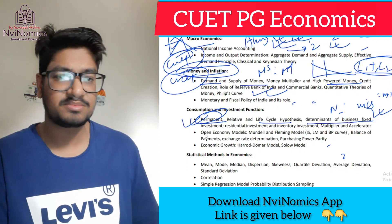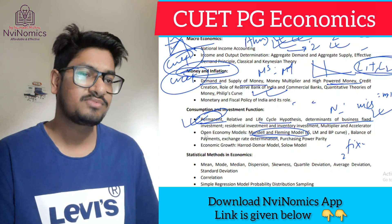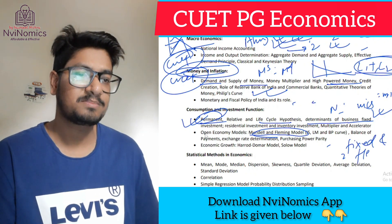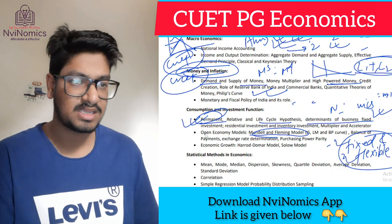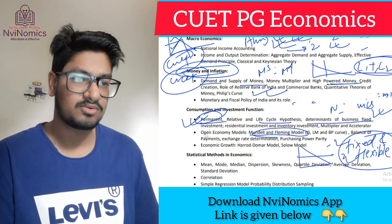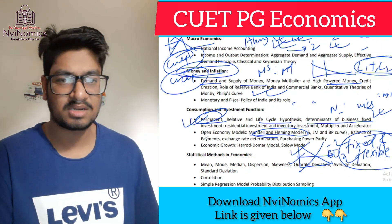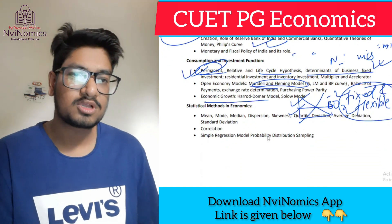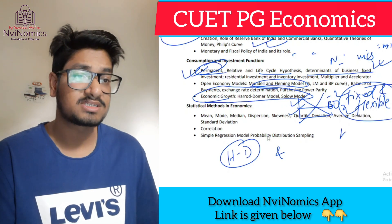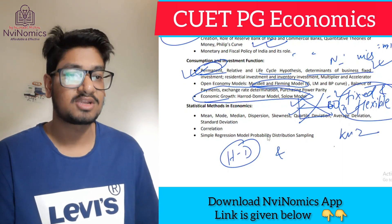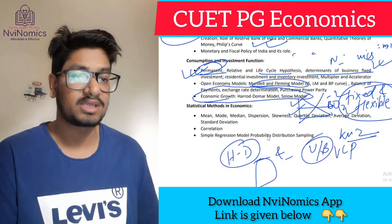Life cycle hypothesis and determinants of business investment — one or two questions come from these. Mundell-Fleming is very very important — see the basics in fixed and flexible exchange rate regimes, not in deep price volatility. Know the BOP curve — where depreciation occurs, what happens above and below the line, which curve shifts. Economic growth models: Harrod-Domar and Solow. Also know the vicious circle of poverty, unbalanced and balanced growth theory, and who invented them — match-the-following questions come frequently.